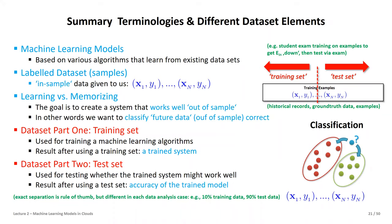To summarize: machine learning models always come with an algorithm. The perceptron has the perceptron learning algorithm; support vector machines use quadratic programming; neural networks use backpropagation. These algorithms come in different varieties and are tuned accordingly. In supervised learning, we have labeled data. In unsupervised learning — which we're not focusing on here — you have no guiding labels, making it much harder.